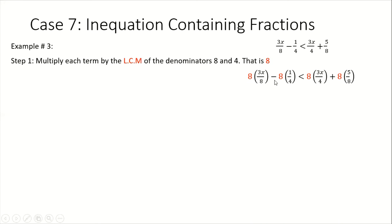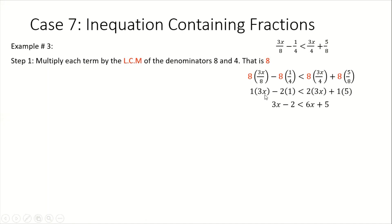Multiplying each term by 8 eliminates the fractions. Simplifying: 8 into 8 gives 1, so we get 1 times 3x. Then 4 into 8 gives 2, so we get 2 times 1. On the right: 4 into 8 gives 2, so 2 times 3x gives 6x, and 1 times 5 gives 5. So we have 3x minus 2 < 6x + 5.